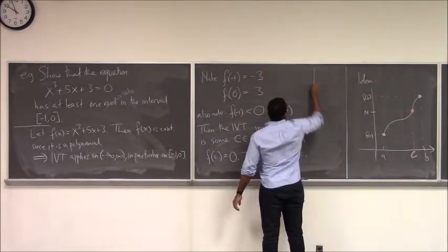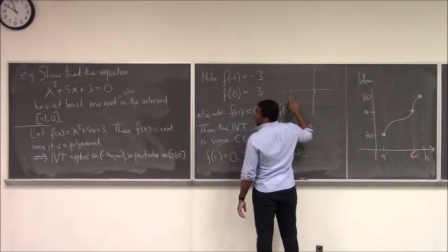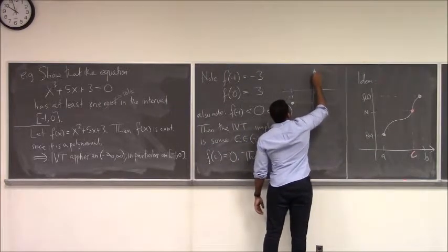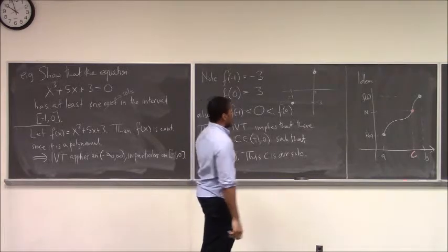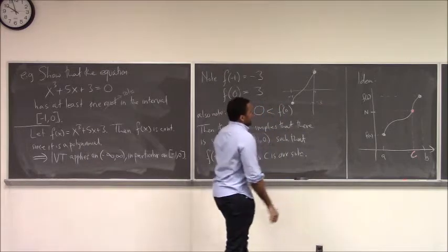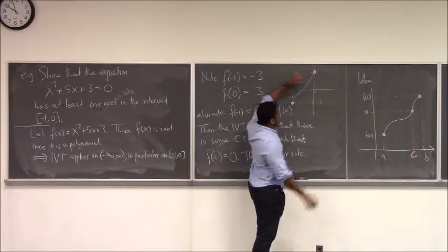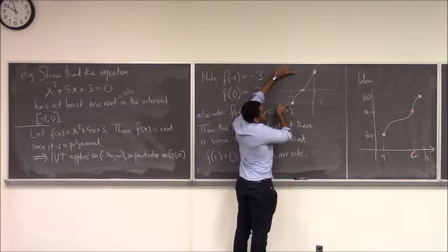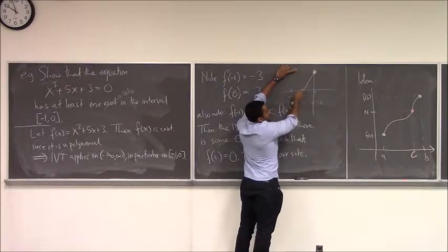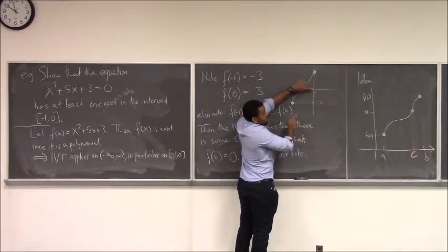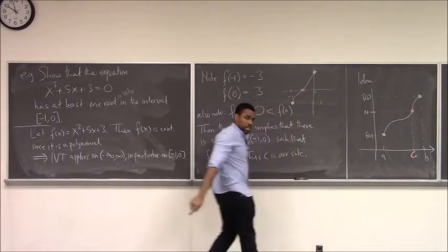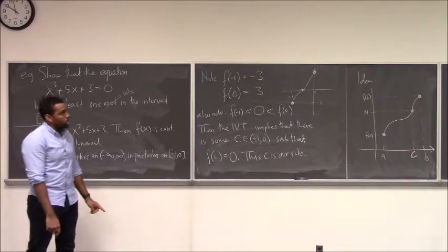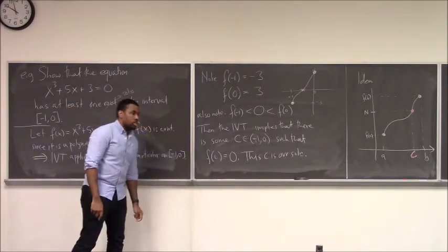The idea: you had a function between -1 and 0. At -1 it was at -3, so the function is definitely below zero. At 0 it's at 3, so the function is above zero. The function passes through those points and we know it's continuous, which means whatever it's doing in the middle, it will definitely hit all y values. There must be a point in traveling from (-1, -3) to (0, 3) that you cross zero. Once we have two different y values and our function is continuous on the interval, it will attain all y values in between.